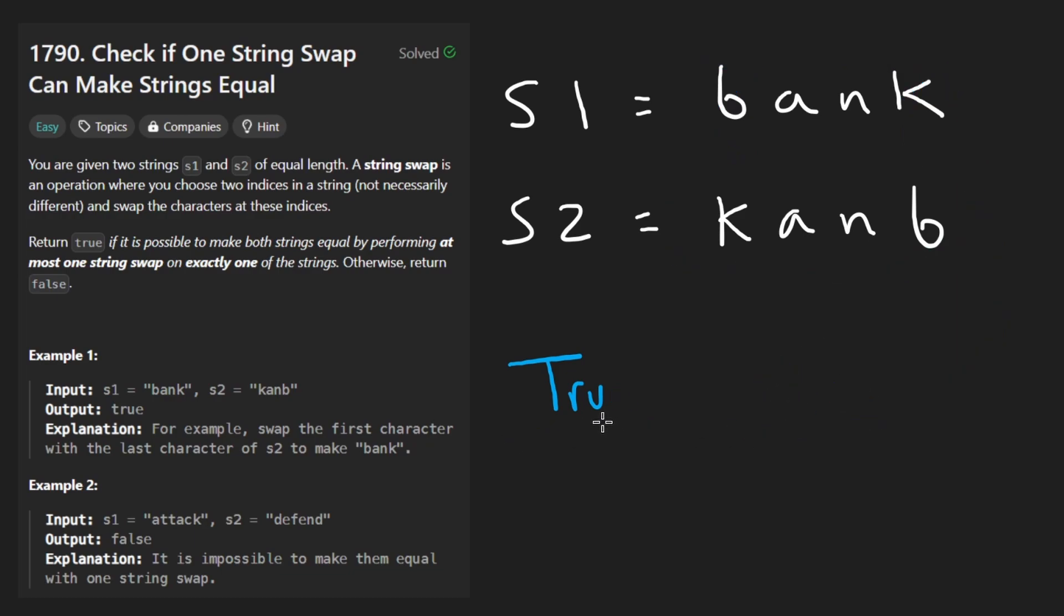If it's not possible to do that, for example here you can see we're given a string attack and a string defend, it's not possible in that case we return false. We're also told that we don't have to perform a swap, we can perform at most one swap. So suppose we were given two strings like ABC and they're already equal, well then we can also return true.